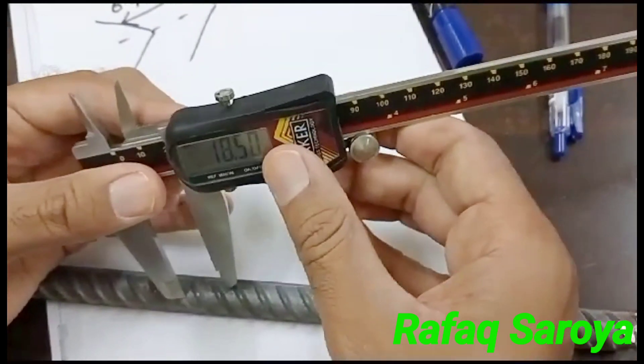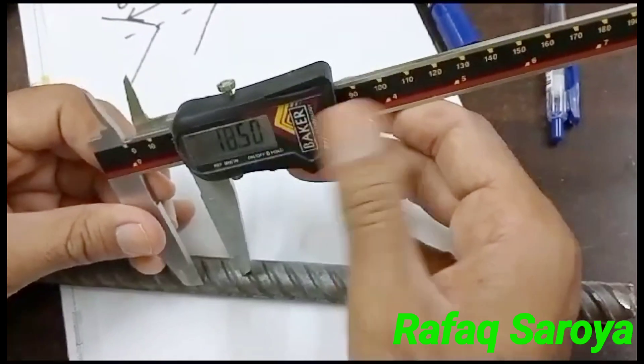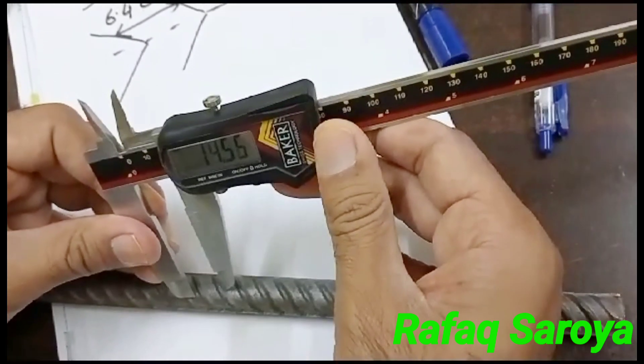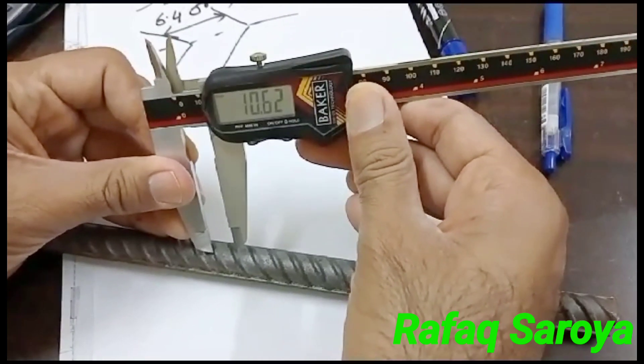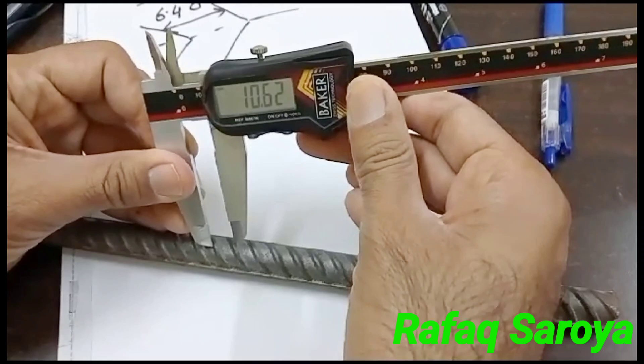And this spacing, note that it's always taken between the transverse. Its value comes out to be 10.62.